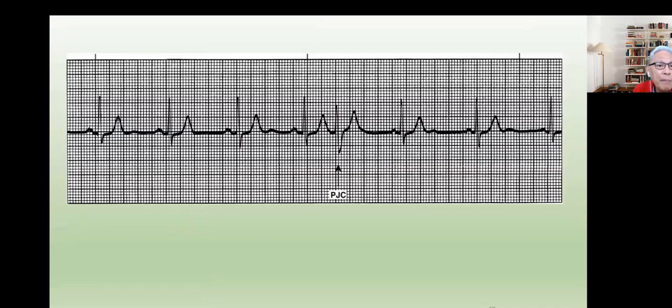Here's another example. Notice now that we have a regular rhythm, and all of a sudden there is a beat that comes before. So we call this premature. Premature what? Where did it come from? We notice that this does not have any P wave. This is coming from the AV node. So therefore, we call that a premature junctional contraction.